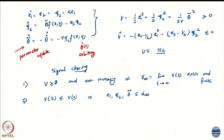Now, because I am going towards Barbalat's lemma, I want to prove that these signals are Lp and L-infinity, and that their derivatives are also Lp or L-infinity. So now I want to prove that these signals are L2, and that is pretty straightforward — I am going to integrate both sides.